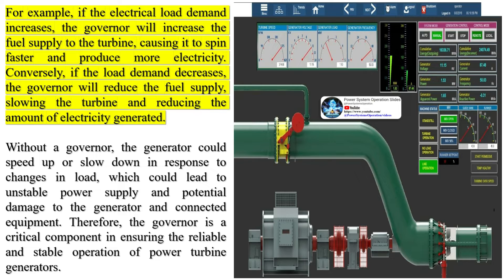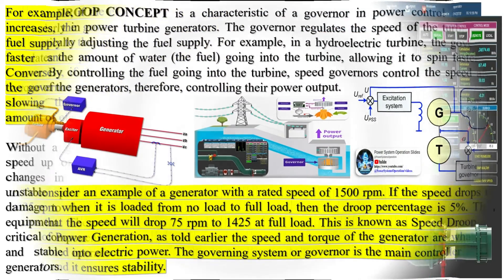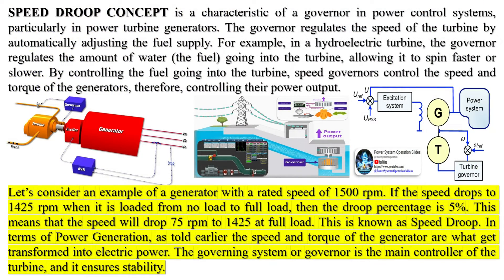Therefore, the governor is a critical component in ensuring the reliable and stable operation of power turbine generators. The speed droop concept is a characteristic of a governor in power control systems, particularly in power turbine generators. The governor regulates the speed of the turbine by automatically adjusting the fuel supply. For example, in a hydroelectric turbine, the governor regulates the amount of water — the fuel — going into the turbine, allowing it to spin faster or slower. By controlling the fuel going into the turbine, speed governors control the speed and torque of the generators, and therefore their power output.